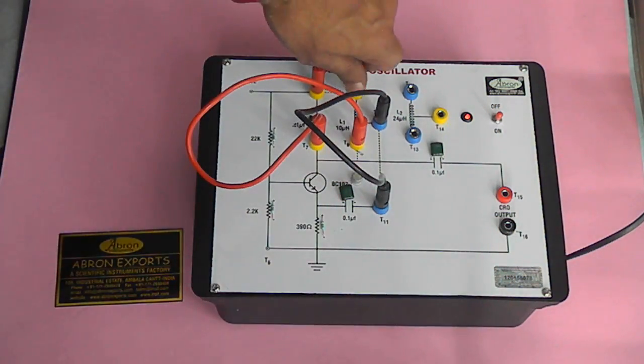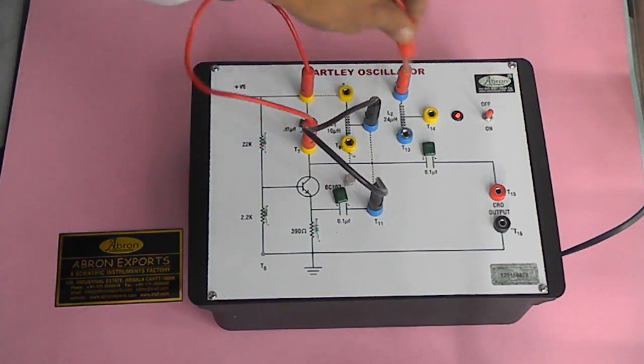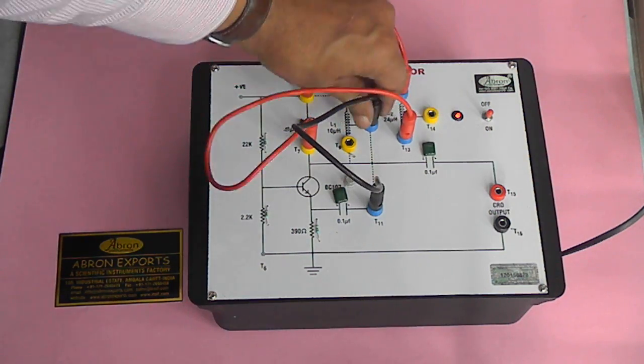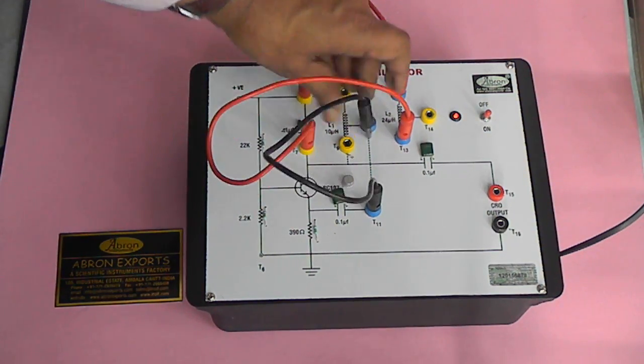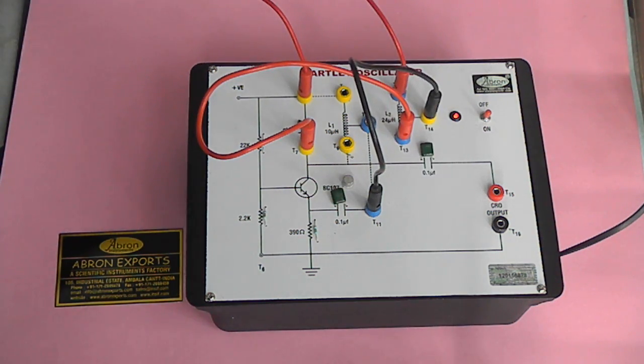Similarly, the experiment can be performed by changing these circuits to the second circuit, second inductance, and you can connect the second in the circuit and do the same experiment.